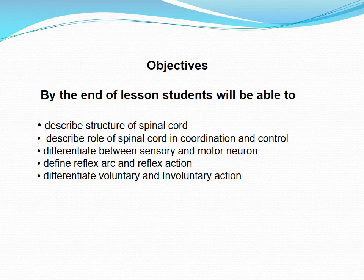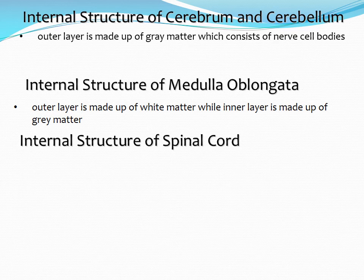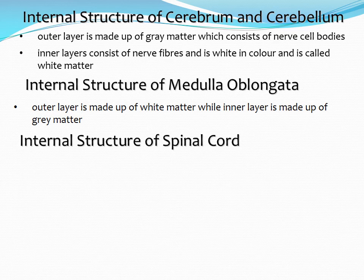I am going to explain the internal structure of the cerebrum. As you know, the outer layer is made up of gray matter, which consists of nerve cell bodies, and the inner layer consists of nerve fibers and is white in color, called white matter. Previously I discussed medulla oblongata — the third part of the brain — where the outer layer is white matter while the inner layer is gray matter.